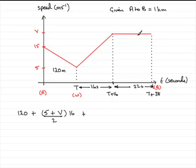Plus now for this section here, well this is just a simple rectangle and so we're going to have V times 22 to get the area, 22V in other words. And that total distance is going to be equal to the 1km but we must change it to 1,000 metres.